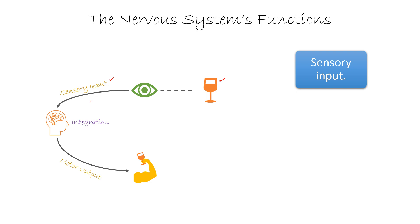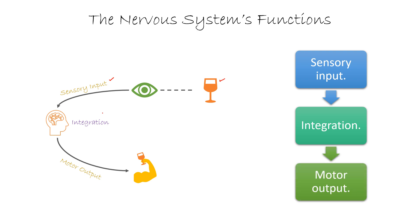This information is passed on to one type of neuron called the sensory neuron. Now the brain, after receiving the sensory input, processes the information and decides what should be done — the work right now is to drink the water. It integrates the information and decides a course of action, giving a motor output. This motor output information is passed on via the motor neurons to an effector organ, in this case the muscles of the hands, which contract so we can pick up the glass of water and drink it.